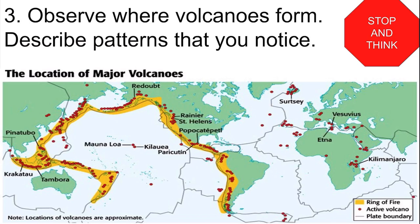However, there are some notable exceptions. Some volcanoes form within plates, such as the Hawaiian Islands and the Canary Islands off the coast of Africa. There are also some boundaries that lack volcanoes — if you look just south of the Pacific Northwest in the region of California, there aren't many volcanoes. That is the San Andreas Fault, which is a transform boundary. So volcanoes do not form at transform boundaries. Instead, they form at divergent boundaries, some convergent boundaries, and within plates.